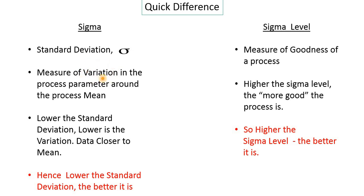High variation is not good for us. Lower the standard deviation, lower is the variation — meaning the data is more and more close to the mean. Standard deviation gives us an idea of how far or how close the data is from the mean. So lower the standard deviation, lower is the variation, which is a good thing. Lower the standard deviation in a process, the better the process is.